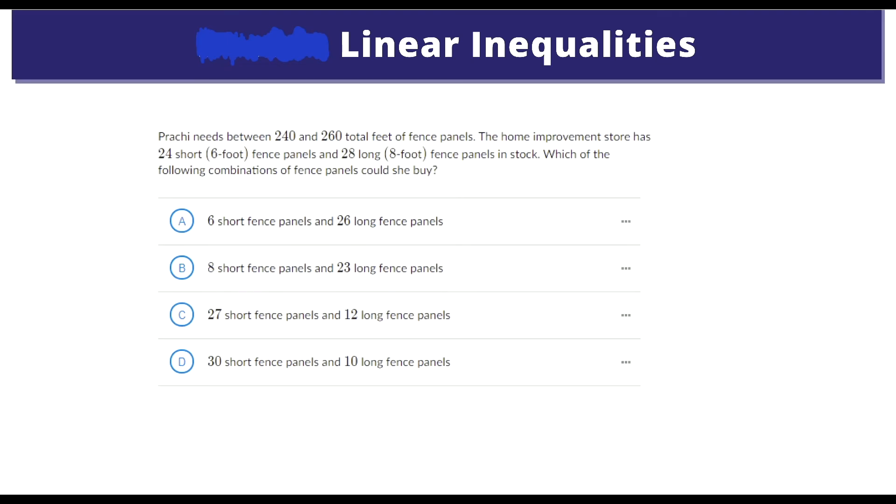On to the next one. Priority needs between 240 and 260 total feet of fence panels. The home improvement store has 24 short 6-foot fence panels and 28 long 8-foot fence panels in stock. Which of the following combinations of fence panels could she buy? 6 short fence panels and 26 long fence panels. So this is our window. We're going to set up an inequality. So we know that she needs to have between 240, so anything greater than or equal to 240, or anything less than 260, equal or less than 260.